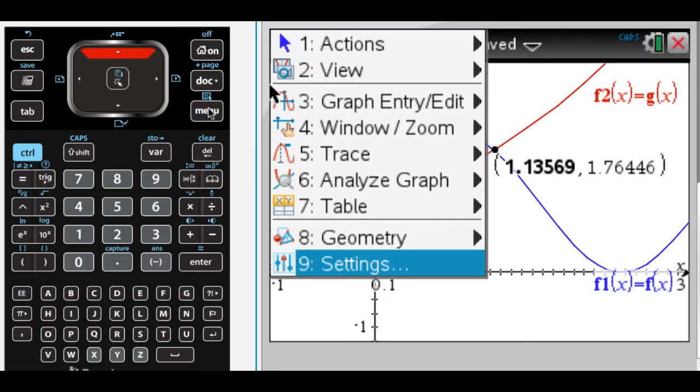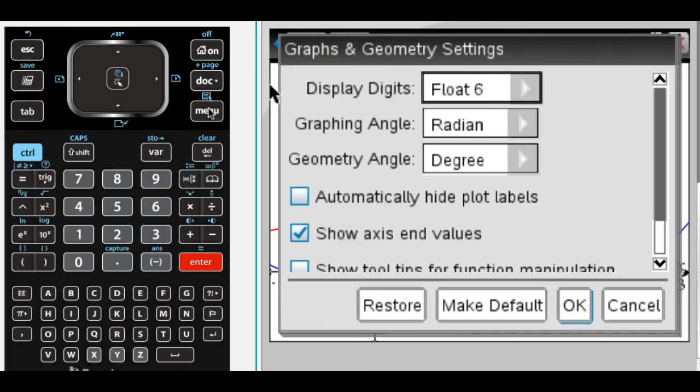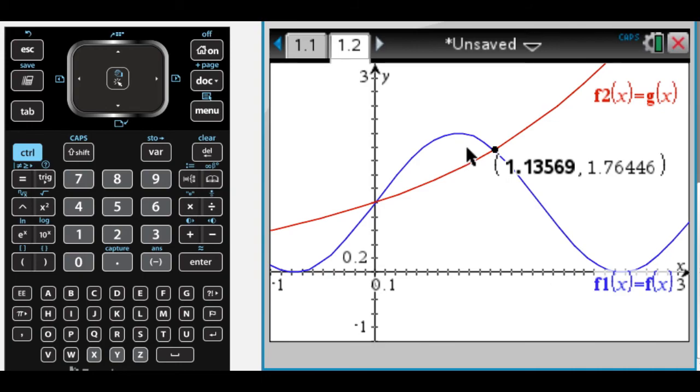It stores all the decimals for you. But in general, if you press menu settings, I always go to float 6. And then I make it the default. But I'm already set up for that. So now I have that.